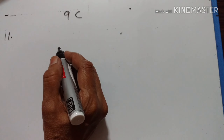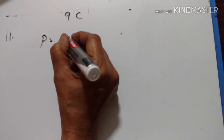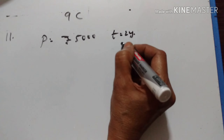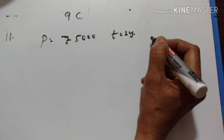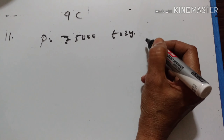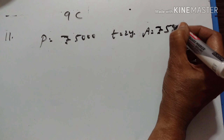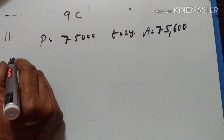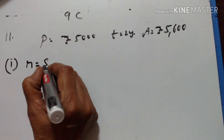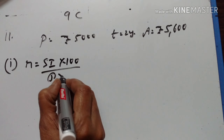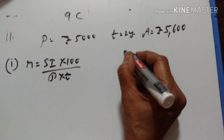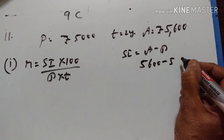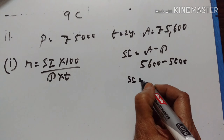11th problem. A person invests Rs. 5,000 for 2 years. Principal is equal to Rs. 5,000. Time is equal to 2 years at a certain rate of interest compounded annually. At the end of 1 year, this sum amounts to Rs. 5,600. Amount is equal to Rs. 5,600. Calculate the rate of interest per annum. Rate is equal to SI into 100 upon P into T. SI is equal to A minus P — that is 5,600 minus 5,000 — so SI is equal to Rs. 600.